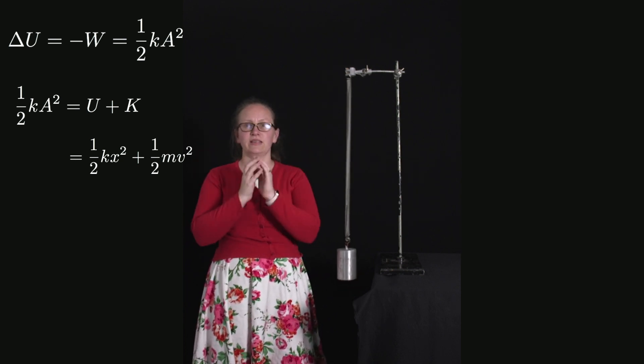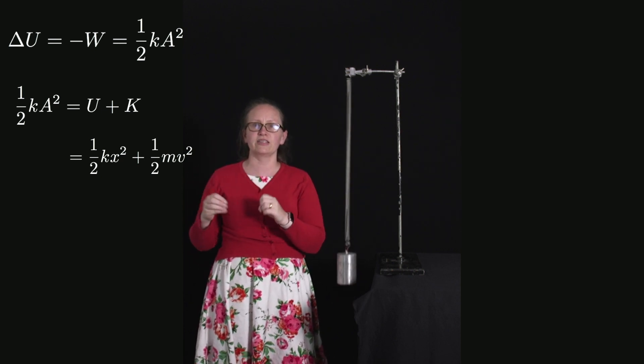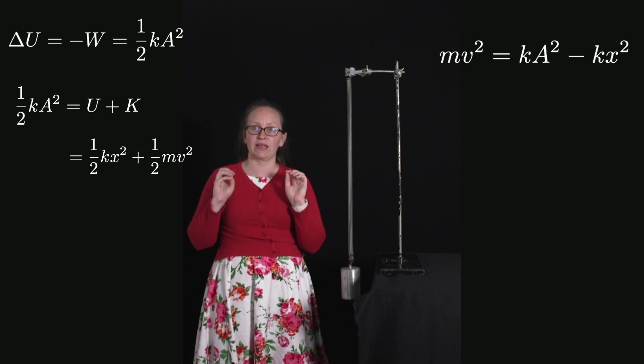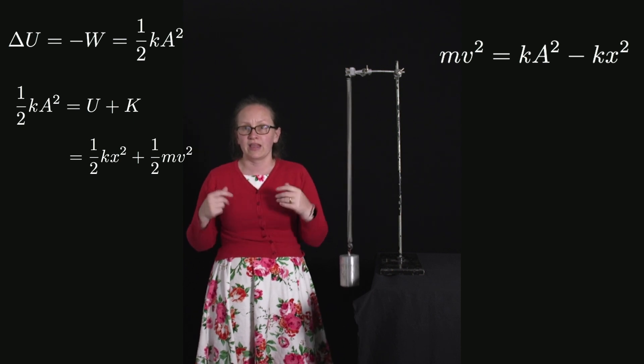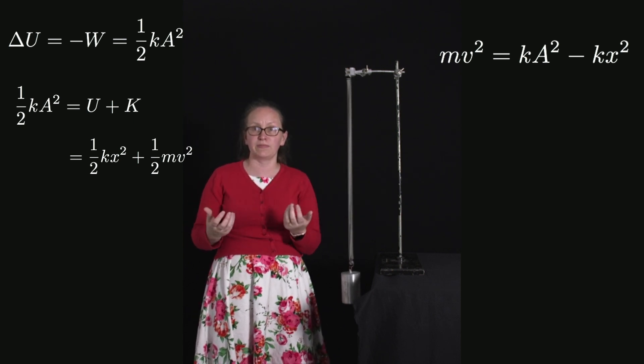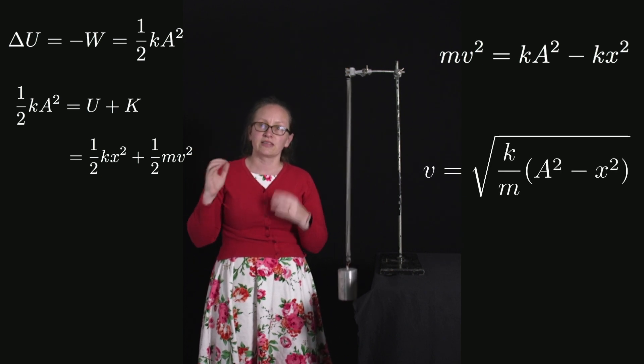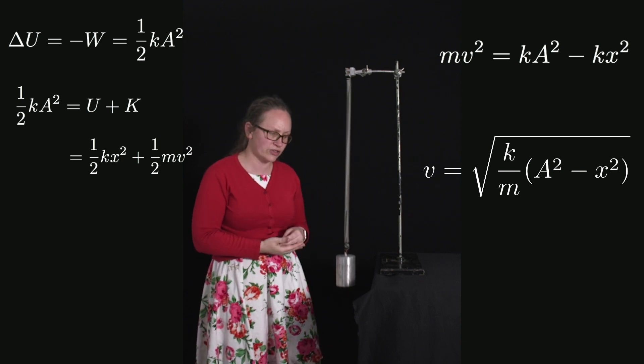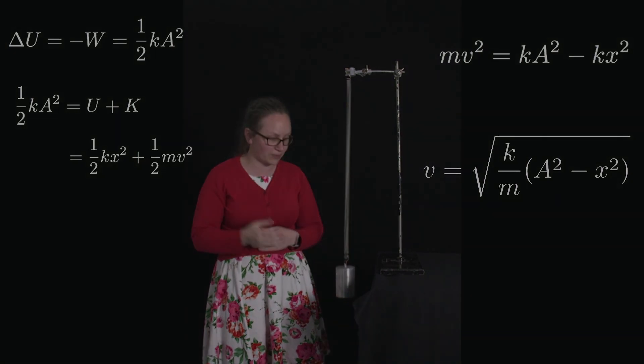We can rearrange this. We want to put v on one side, so we've got m v² equals k a² minus k x². We've cancelled off all the common factors of 1/2 there. So you can see that the speed is going to be equal to the square root of k/m times (a² minus x²). We've now used energy to come up with an expression for the speed of the spring.